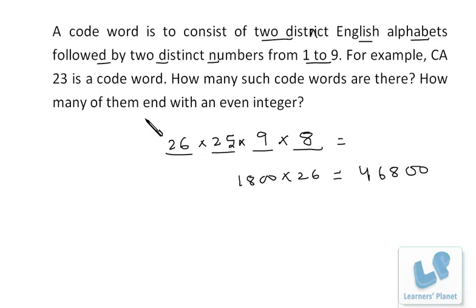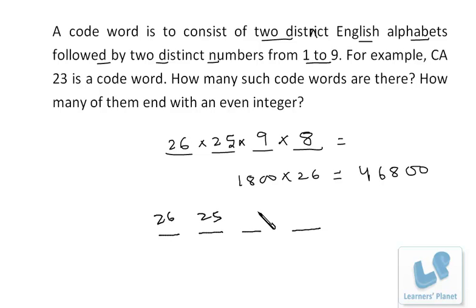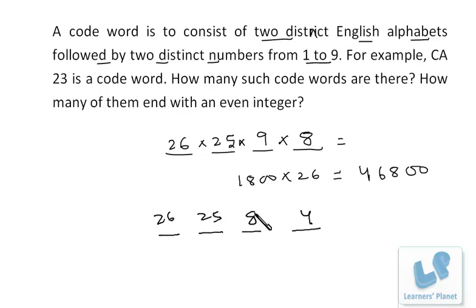Now the next part: how many code words end with an even integer? We still have four places with 26 and 25 choices for the alphabets. A common mistake students make is writing 9 for the third place and 4 for the last place — that would repeat a number. Instead, because we have a restriction on the units place, we fill it first. Even numbers from 1 to 9 are 2, 4, 6, 8 — so 4 choices for the last place. Then we are left with 8 numbers for the third place.